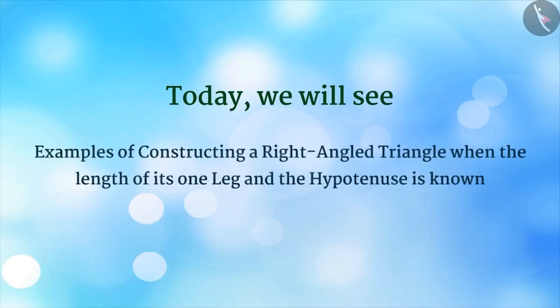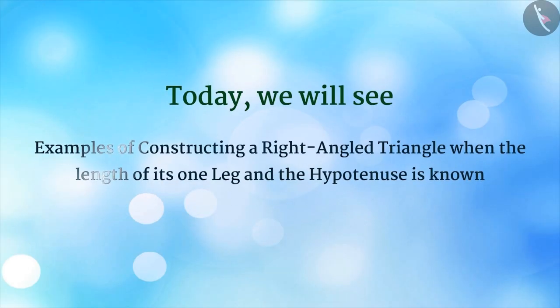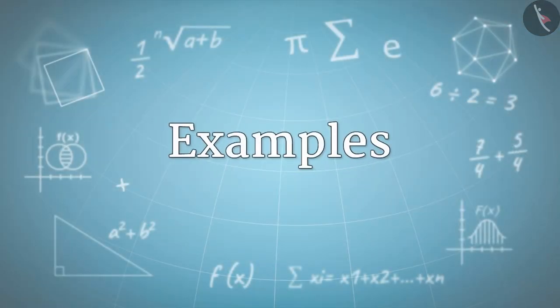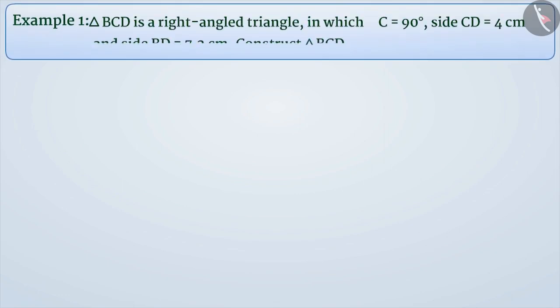Today we will see some examples related to the construction of a right-angled triangle when the length of its one leg and hypotenuse is known. Triangle BCD is a right-angled triangle in which angle C is equal to 90 degrees, side CD is equal to 4 cm and side BD is equal to 7.2 cm. Construct triangle BCD.